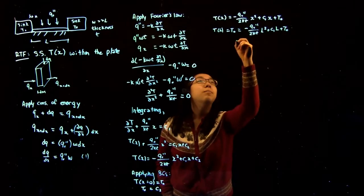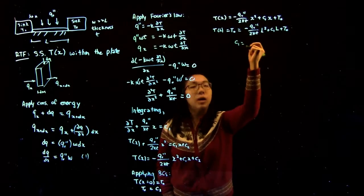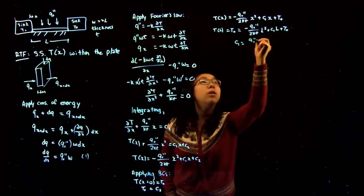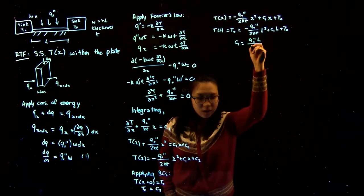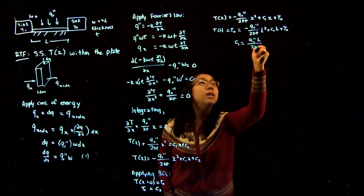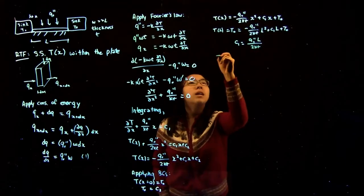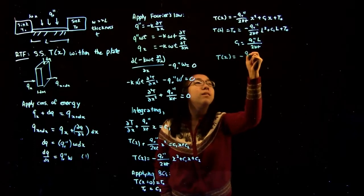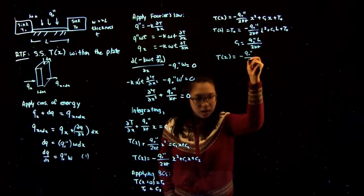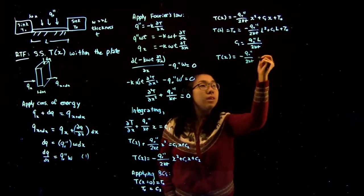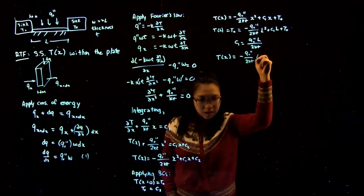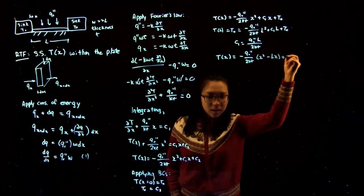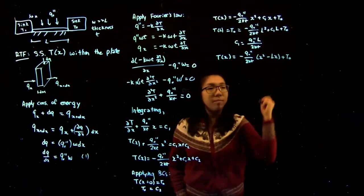Solving for C1 gives us C1 equals Q0 times L over 2Kt, giving us an entire temperature profile of T(x) equals minus Q0 over 2Kt times (x² minus Lx) plus T0.